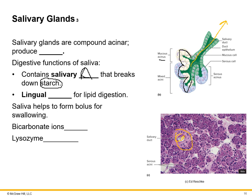Saliva also secretes lingual lipase, an enzyme for lipid digestion. Anything ending in '-ase' is an enzyme. Saliva is secreted into the oral cavity and helps form a bolus — the mass of chewed food mixed with saliva that is ready for swallowing.